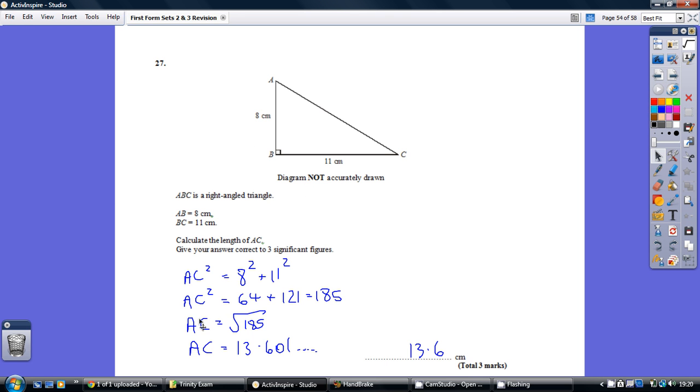How do we then work out AC? Well we have to undo the squaring by square rooting. So we have to square root 185. Using our calculator we get 13.601 and this rounds to 13.6 to three significant figures.